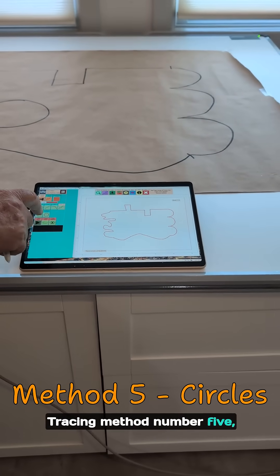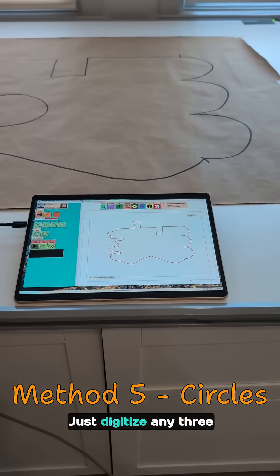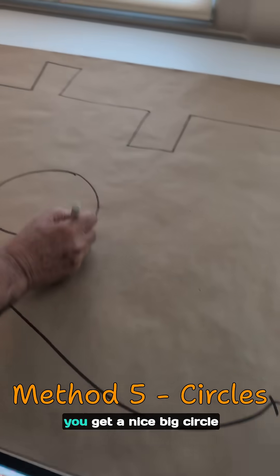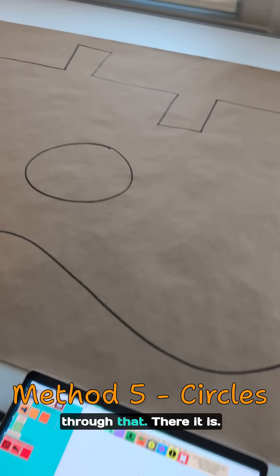Tracing method number five: circles. Just digitize any three points on a circle. You get a nice big circle through that. There it is.